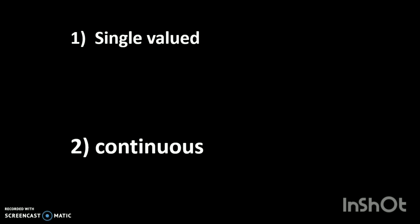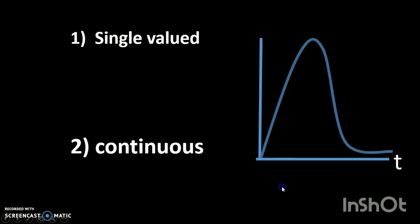Given these two observations, it hopefully seems clear that the way to model these physical quantities is with a continuous function. A function by definition only takes on one value at any single time, and a continuous function does not have any sudden jumps.